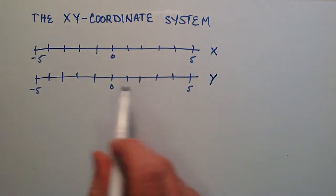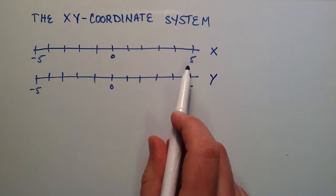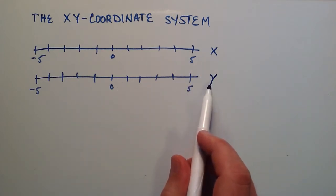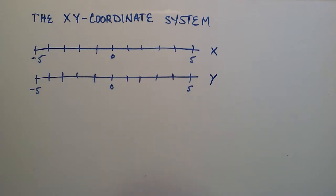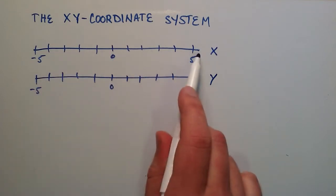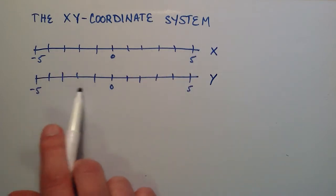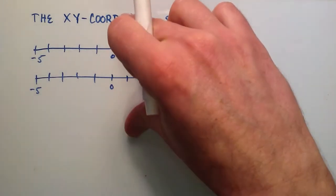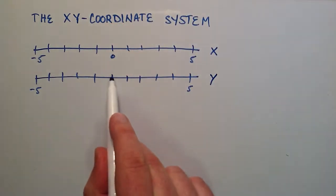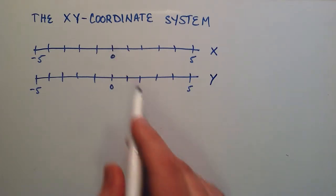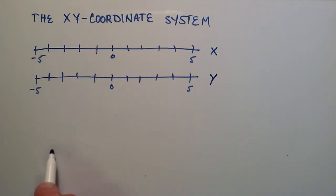There's nothing really fancy here — we just have two basic number lines, one named x and the other named y. When we want to make an x-y coordinate system, we basically leave the x number line just how it is, and then we take the y number line and flip it 90 degrees. When we do that, we make sure that the 0 on the y number line lines up right over top of the 0 on the x number line.